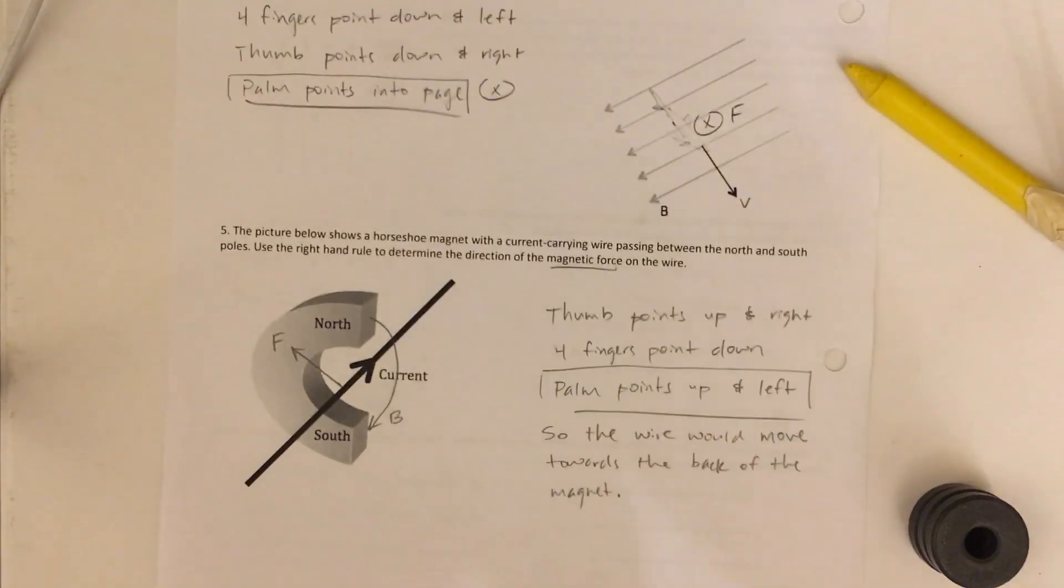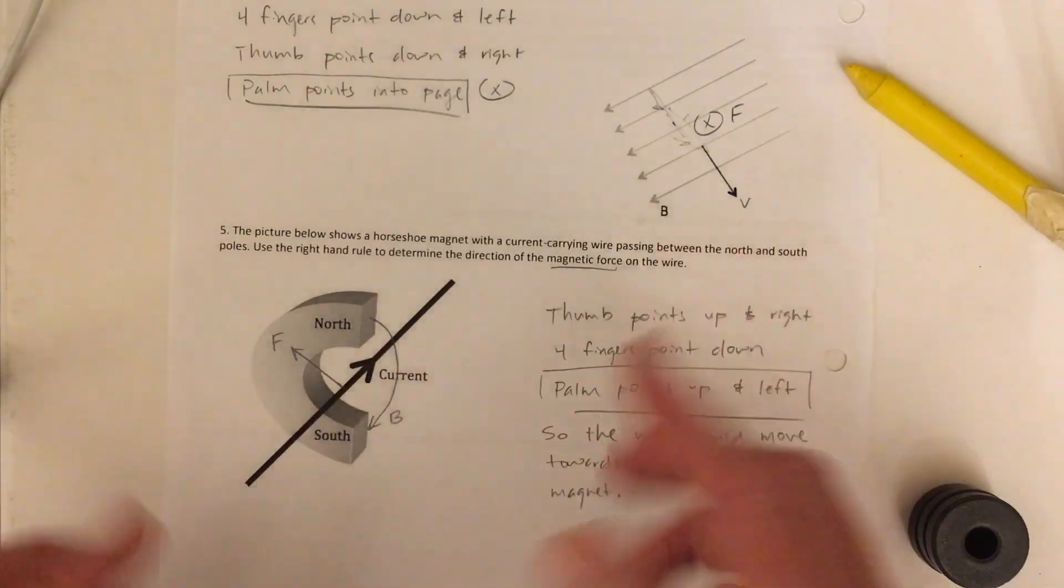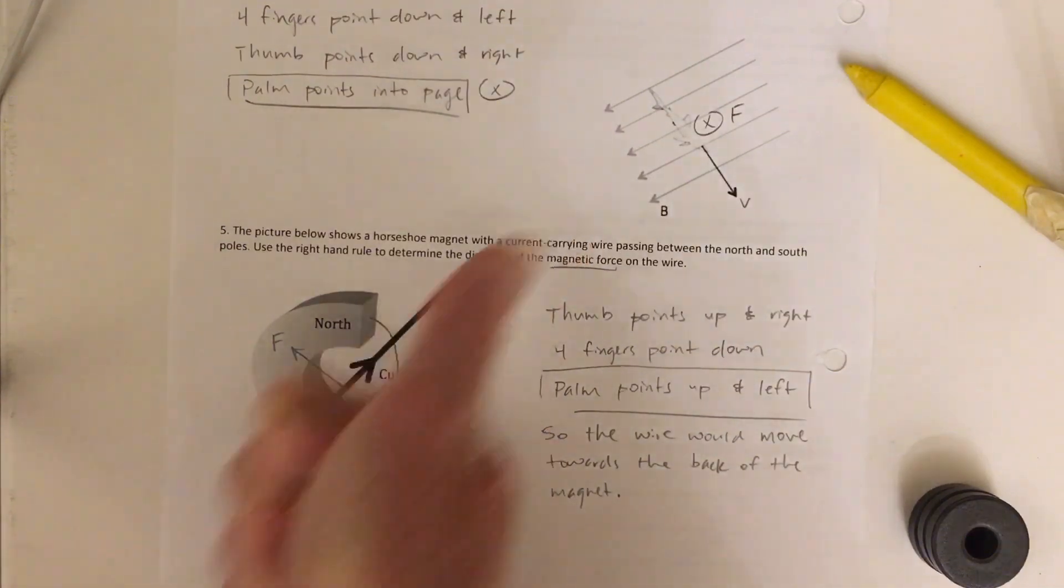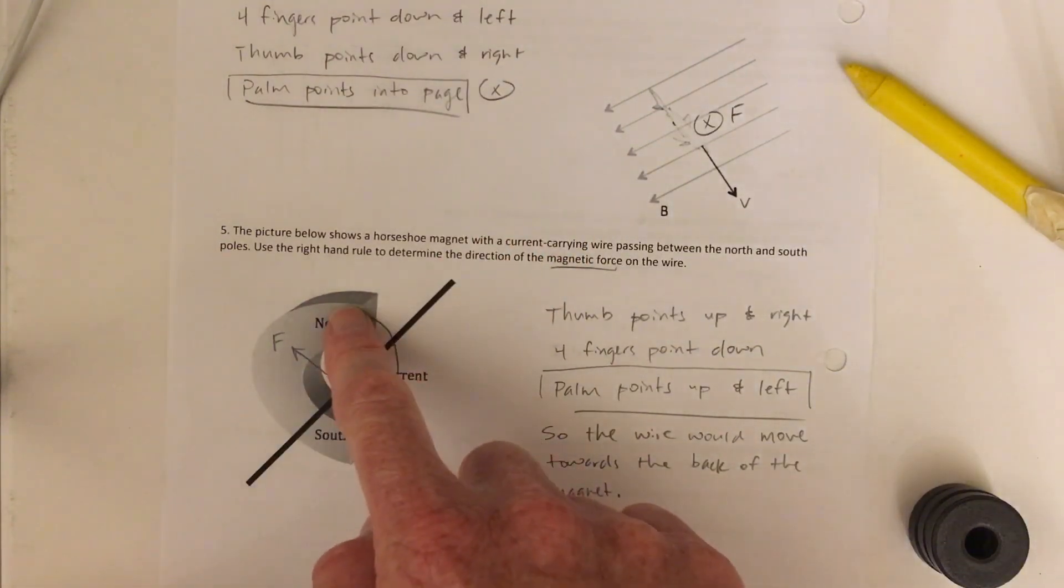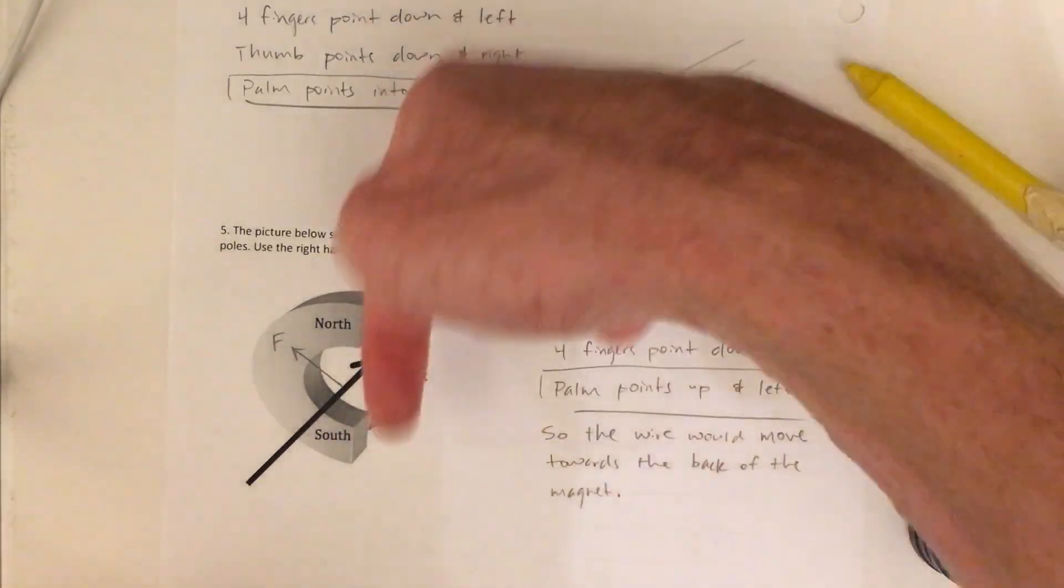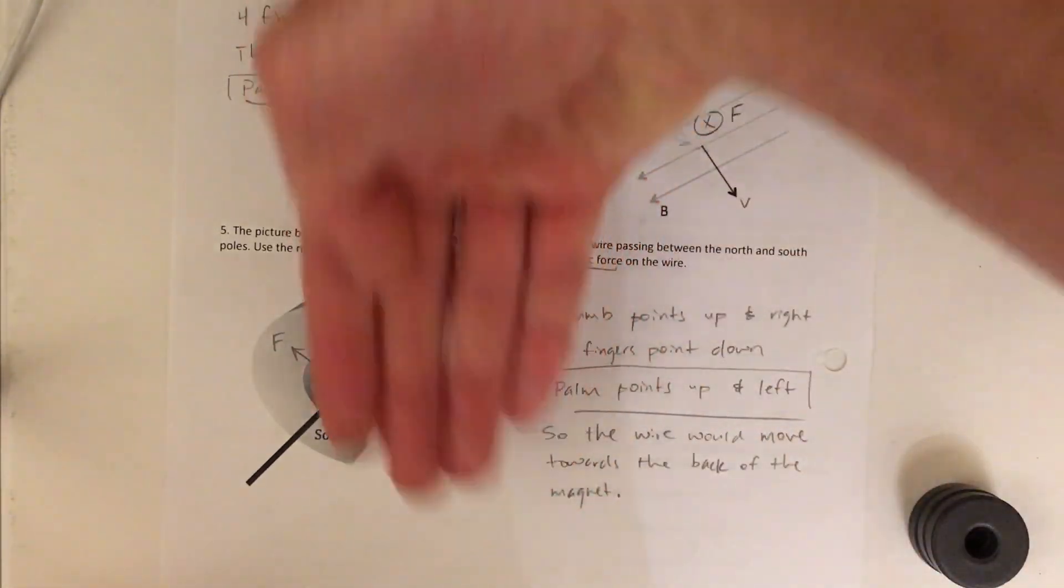Finally, this one's drawn in 3D, so it's a little bit tricky. I'm going to start with the direction of particle velocity, right? The particles in this case are the flow of current. So it's this way with my thumb. And then the magnetic field always goes from north to south. So that's downward. So I need to take these four fingers and point them down.